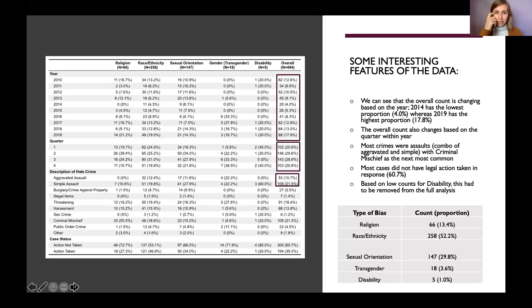Here is a base table summarizing the data. I used five categories for type of bias: religion, race and ethnicity, sexual orientation, gender (specifically transgender), and disability. Looking at the years, 2014 has the lowest proportion at about 4%, while 2019 has the highest at 17.8%. Quarters one and four have only about 21% of crimes, while quarters two and three have closer to 30%. The largest crime types are the two forms of assault — aggravated and simple — followed by criminal mischief. Most cases did not have legal action taken at the time of data access. Race and ethnicity motivated crimes had the highest count at 258, while disability had the lowest at five.